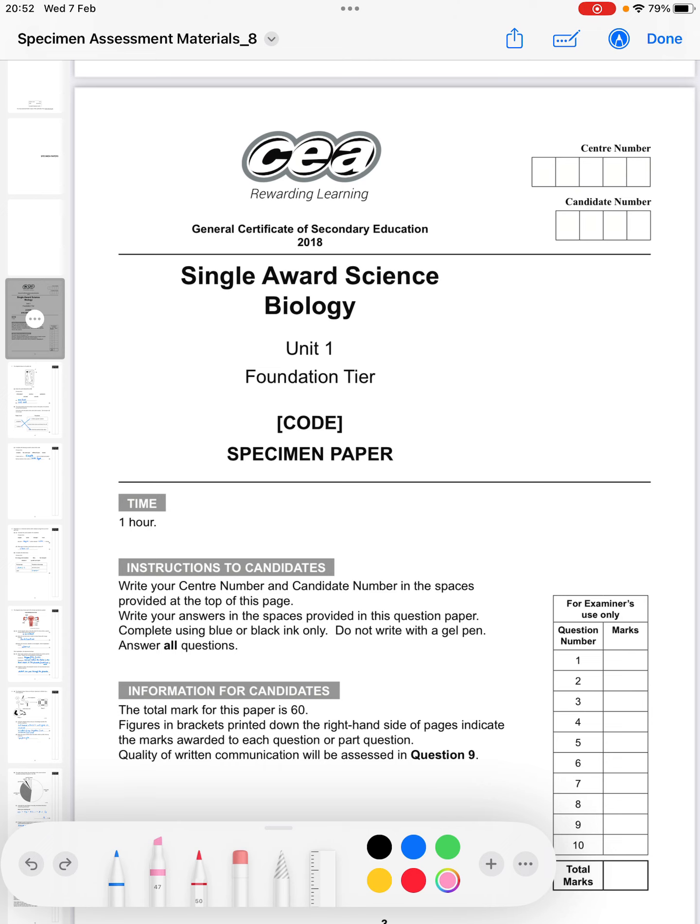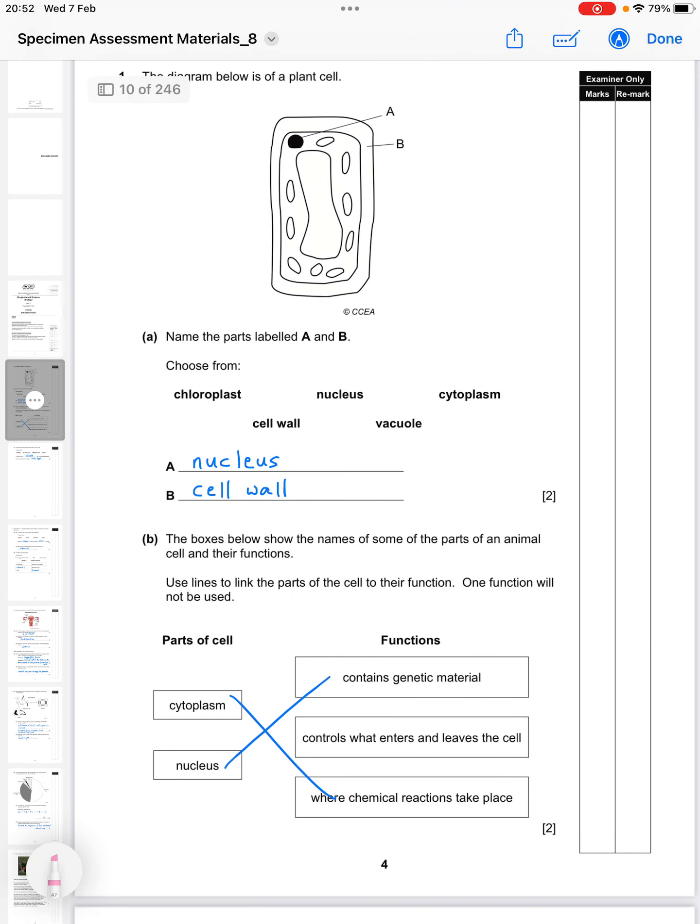Hi, so today I'm going to talk through the single award science paper, unit one, that's the biology section, and this one is the foundation tier paper. 60 marks and one hour long, so here we go. This is of course the specimen material that CCEA provided.